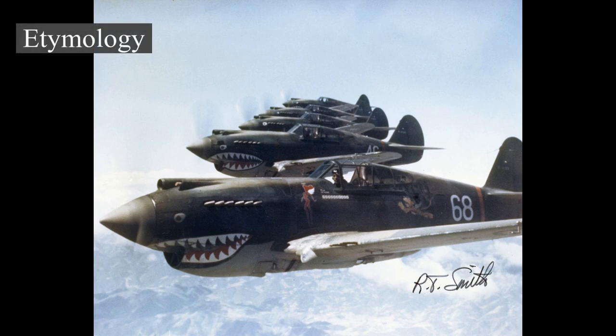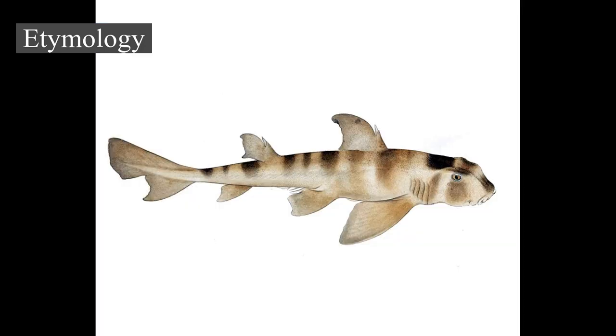Until the 16th century, sharks were known to mariners as sea dogs. This is still evidential in several species termed dogfish or the poor beagle. The etymology of the word shark is uncertain. The most likely etymology states that the original sense of the word was that of predator — one who preys on others — from the Dutch schurk, meaning villain or scoundrel (cf. card shark, loan shark, etc.), which was later applied to the fish due to its predatory behavior.